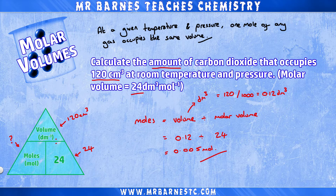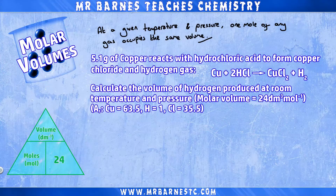0.12 divided by 24 gives 0.005 moles — and that's all you need to know. Or is it? If you remember the other triangle for moles, that comes into play specifically when you start off with a mass of something.